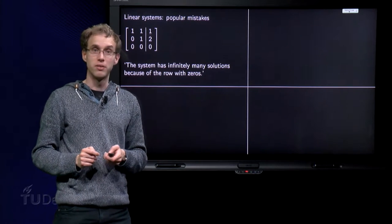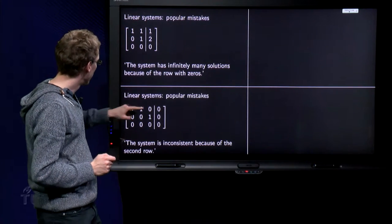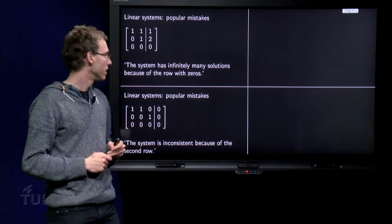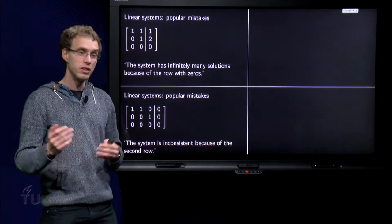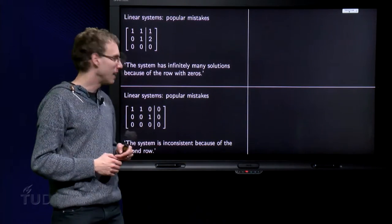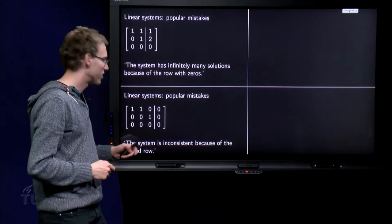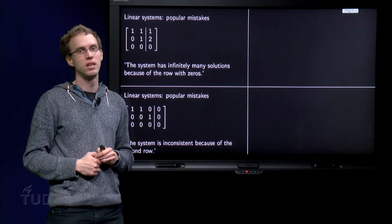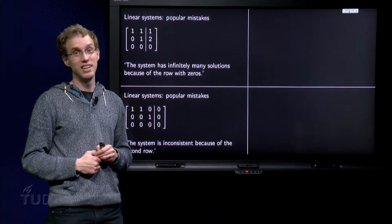Next one. Another augmented matrix, and then we see the argument. The system is inconsistent because of the second row. And then we get really, really sad.